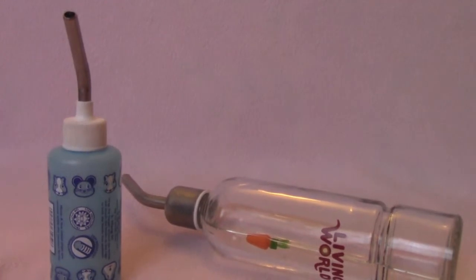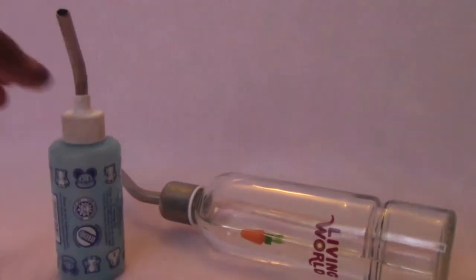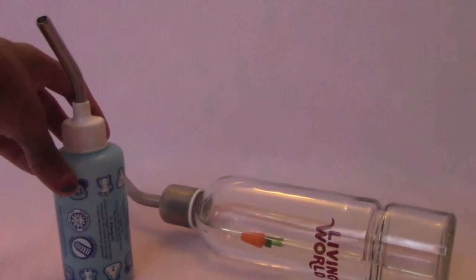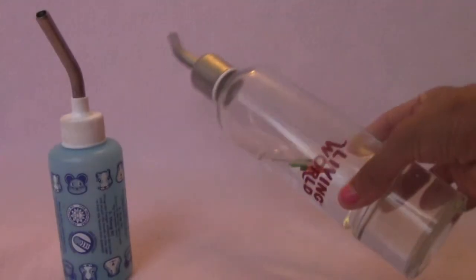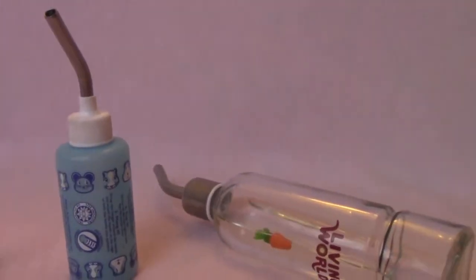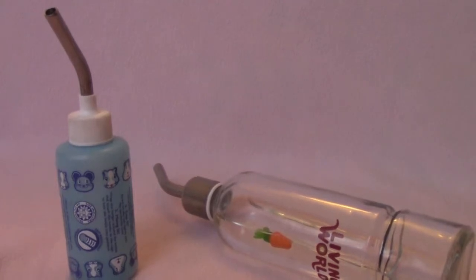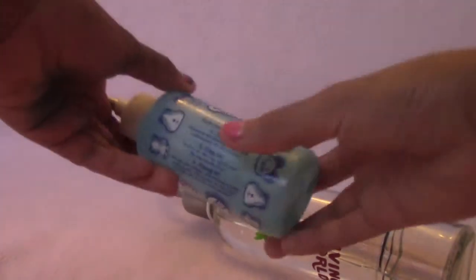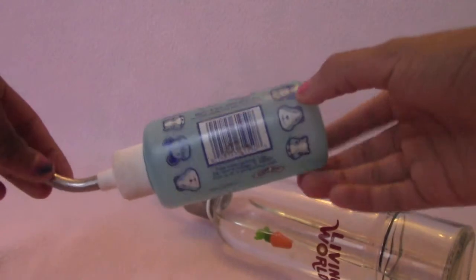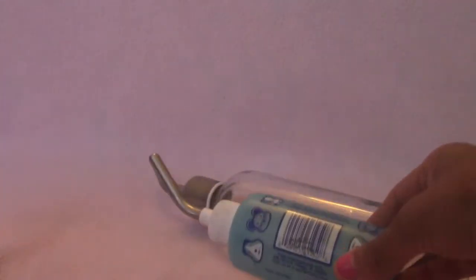So now setting aside the treats, we are going to be moving on to the must have category. So now in the must have category, I just have two water bottles, one plastic and one glass. Now water bottles are vital because humans need water just as hamsters do too. So as you can see, I just have this blue water bottle and it is smaller than the glass water bottle.